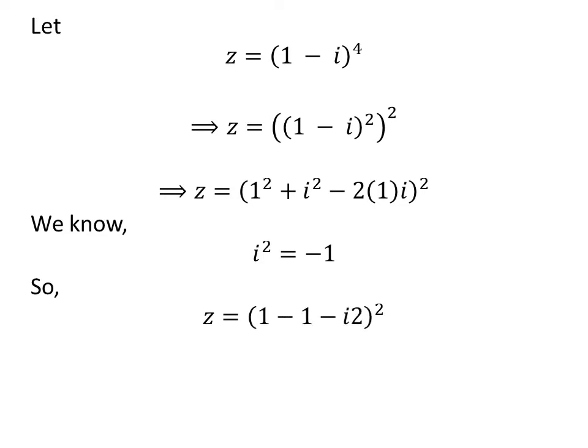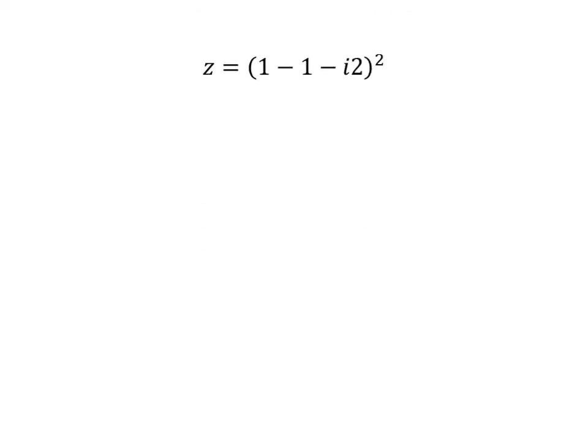Applying this property gives us z = (1 - 1 - 2i)^2. Since 1 - 1 = 0, z = (-2i)^2.